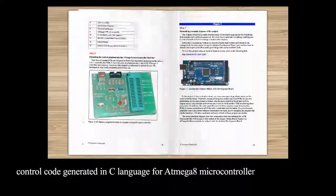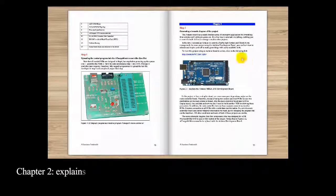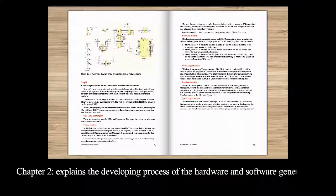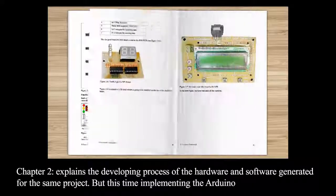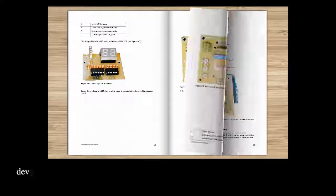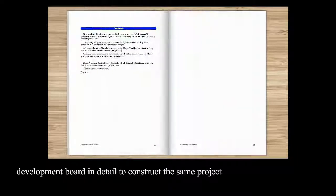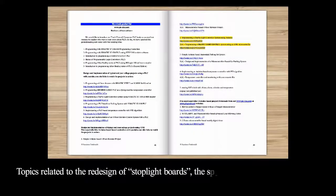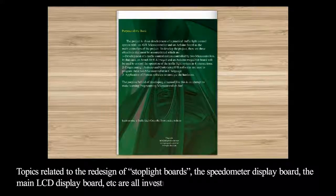Chapter 2 explains the developing process of the hardware and software generated for the same project, but this time implementing the Arduino Mega 2560 development board in detail to construct the same project. Topics related to the redesign of stoplight boards, the speedometer display board, the main LCD display board, etc. are all investigated in this chapter.